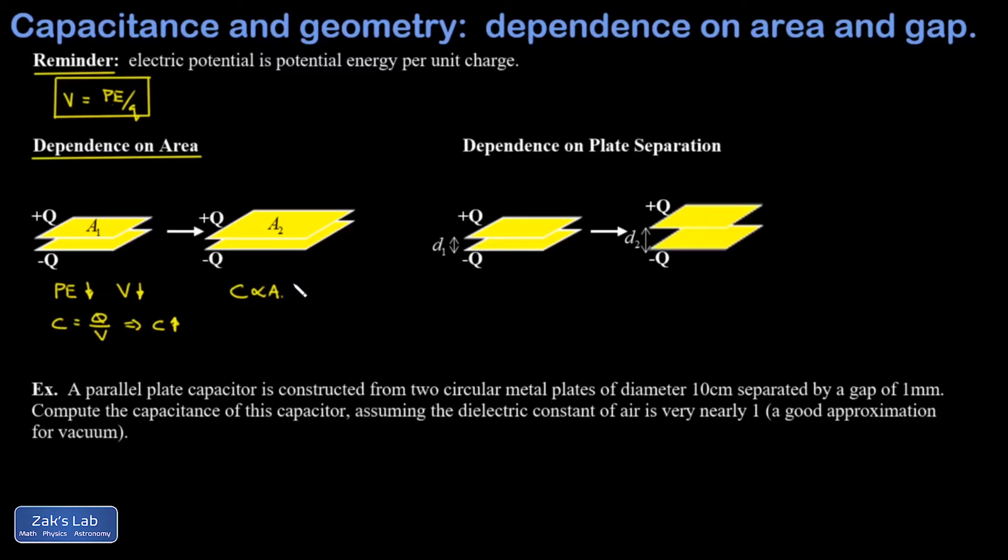In our next experiment we increase the gap between the plates. So what happens to the potential energy? Those positive contributions on each of the plates are not going to change because the like charges are just as crammed together as they were before, but now the unlike charges are farther apart. That means that potential energy contribution just got less negative. In other words, the total potential energy is now higher than it used to be.